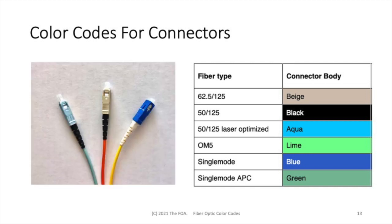Here's an example of how patch cords will be color-coded. On the left is an aqua cable and aqua connector indicating 50/125 laser-optimized fiber. In the center is a beige connector with an orange cable, which says it's 62.5/125 fiber. And on the right, we have a blue connector on a yellow cable, which means we have a single-mode connector that's PC finished. It tells you everything you need to know about the connectors just based on the colors.